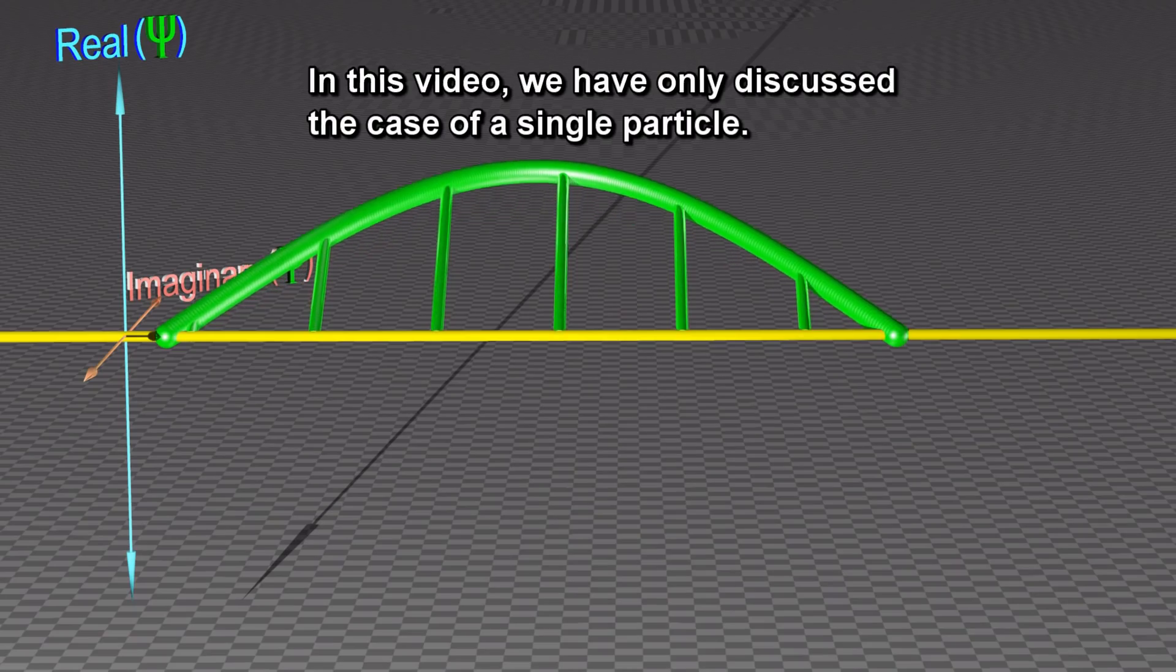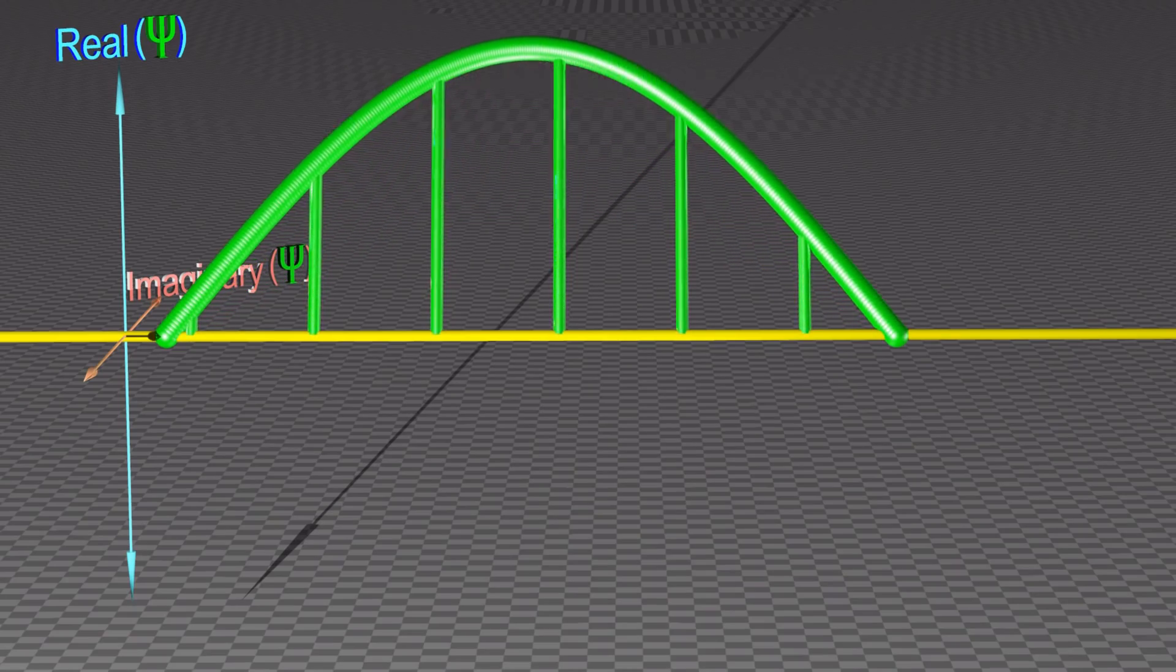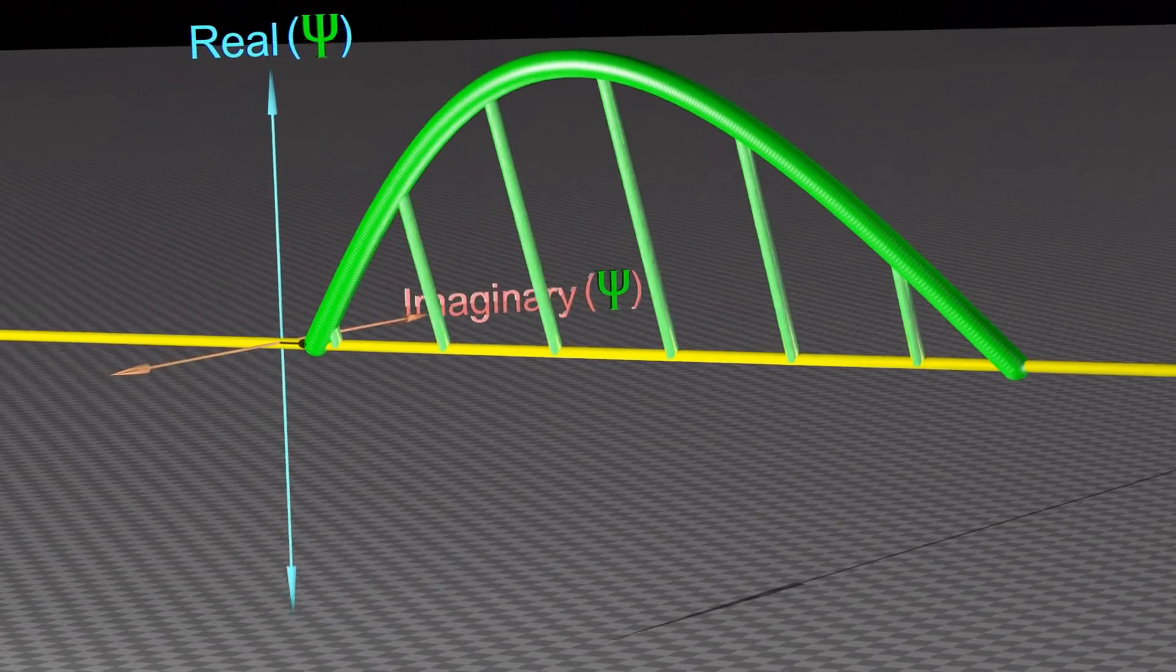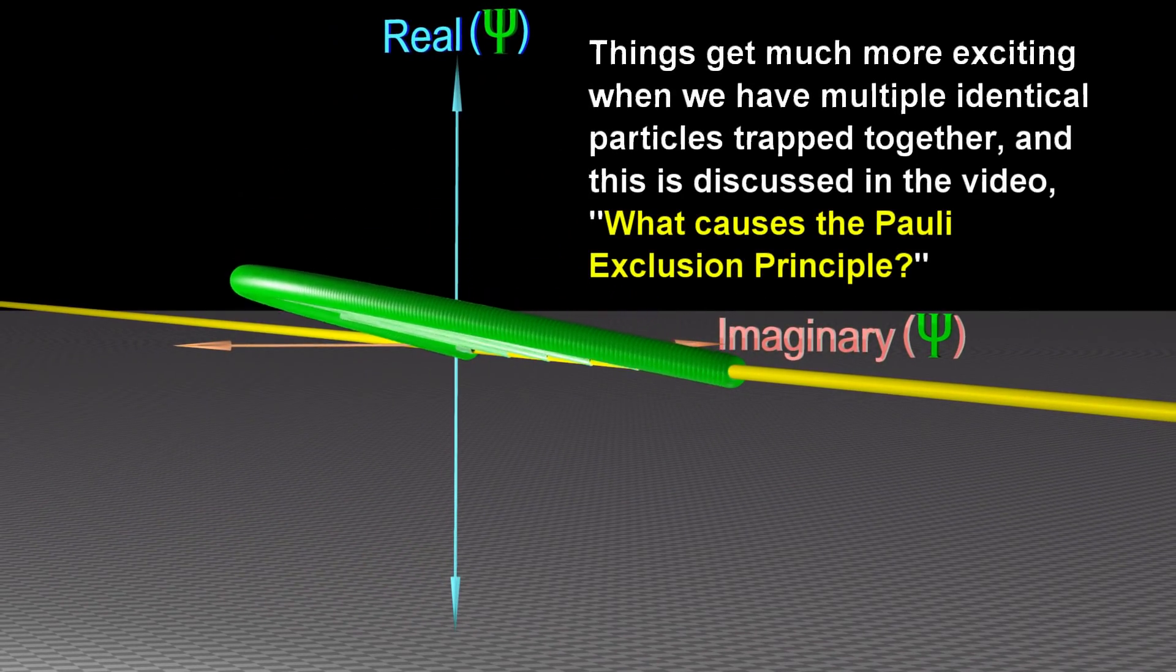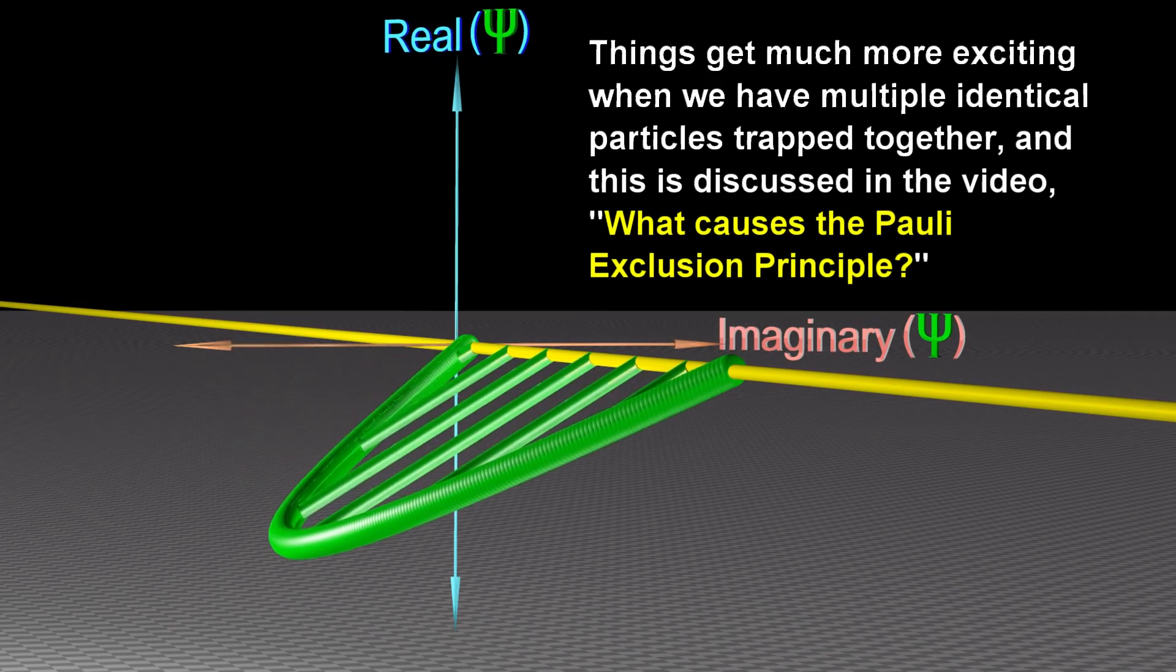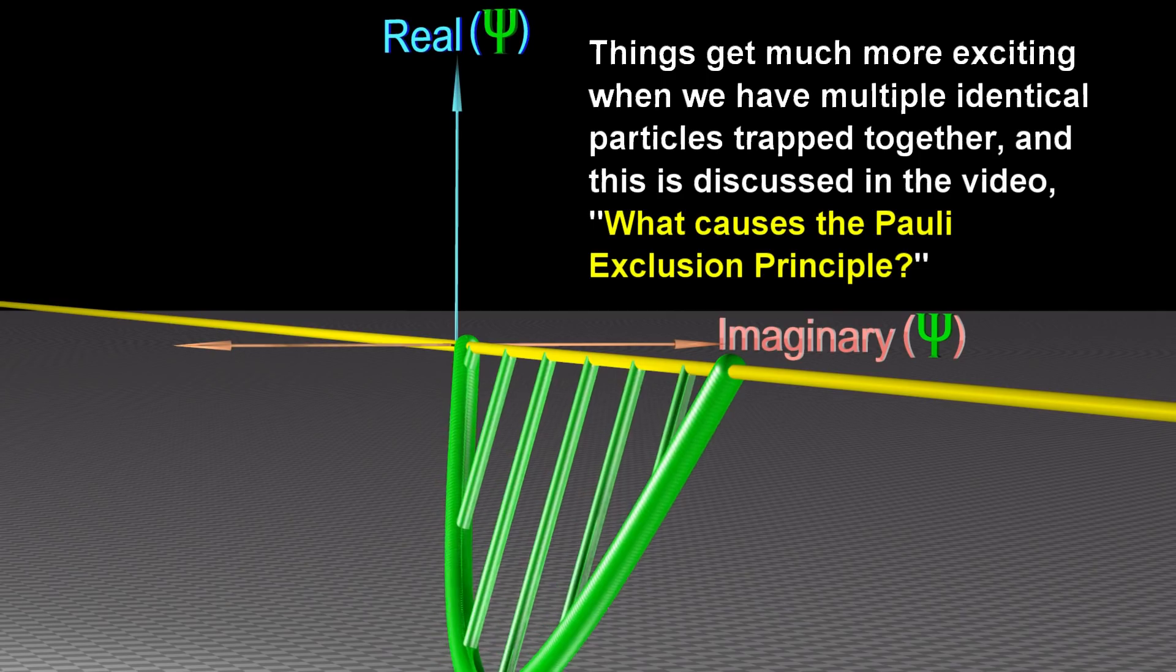In this video, we've only discussed the case of a single particle. Things get much more exciting when we have multiple identical particles trapped together, and this is discussed in the video, What Causes the Pauli Exclusion Principle?